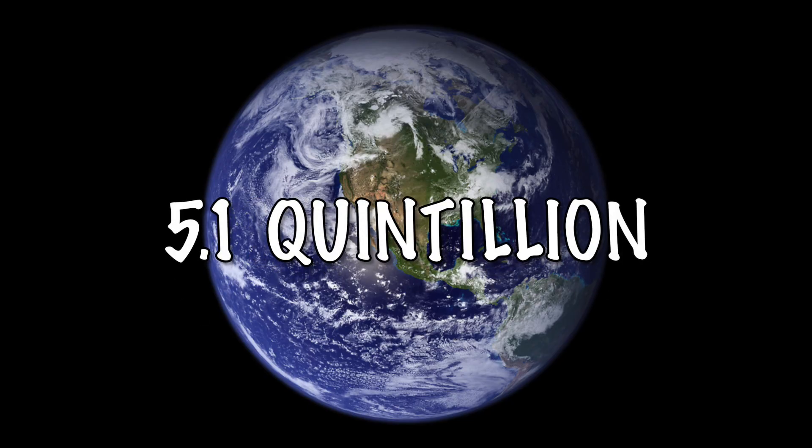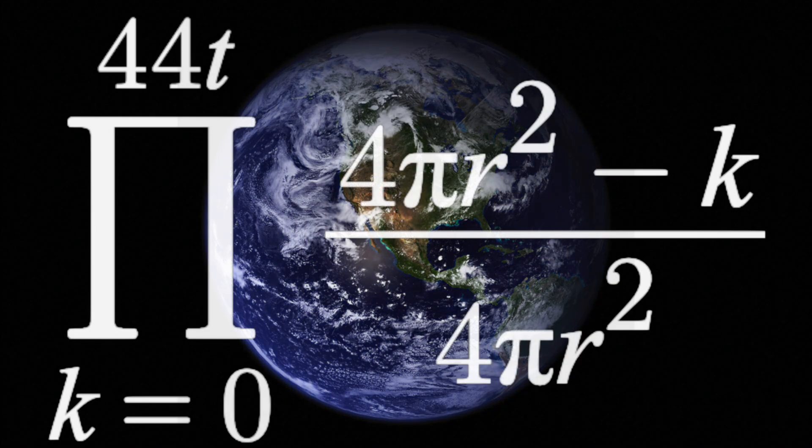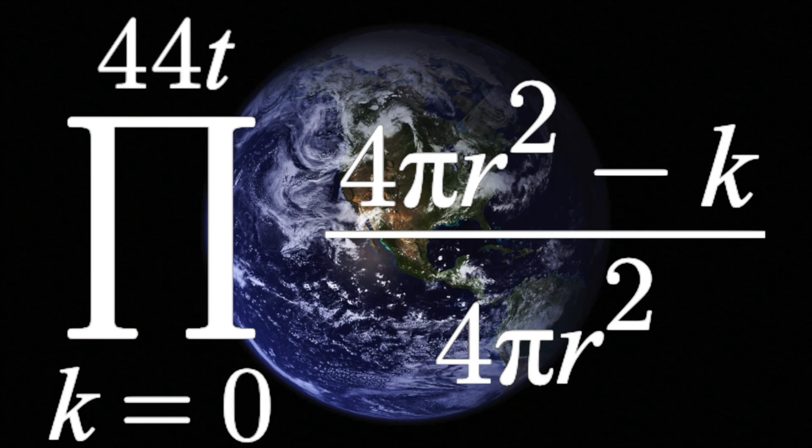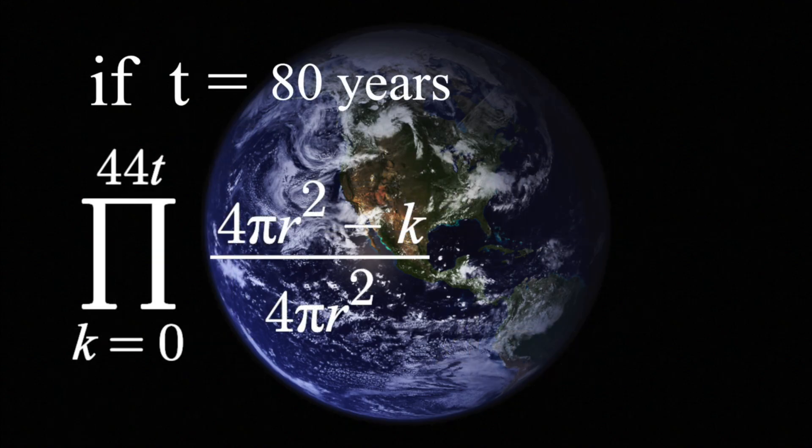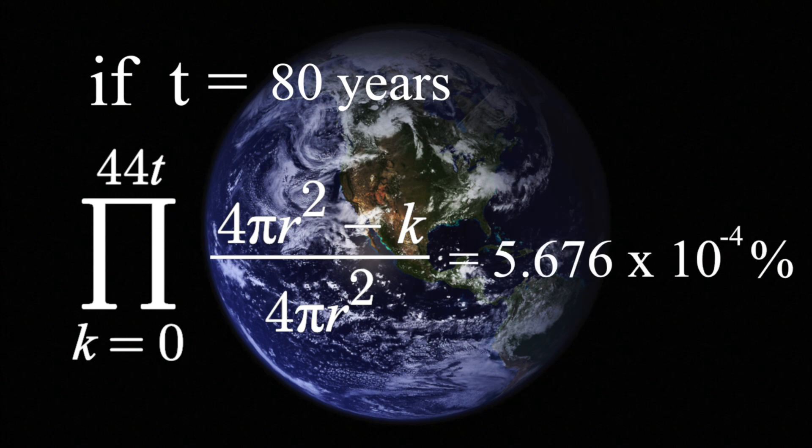So now instead of 510 trillion possible locations for lightning to strike, there are 5.1 quintillion possible locations that lightning could strike. We're using the exact same formula here. We just multiplied R by 100 so that the units are now in centimeters. Now if we put in 80 years for T, we still get less than a 1% chance. So even if you're only counting lightning that is centered above the same square centimeter as the same place, there is still 5 in 1 million chance that it never strikes the same place twice over a human lifetime.